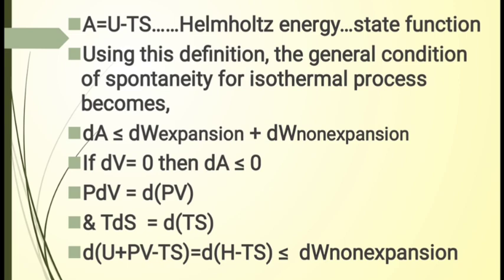Since A equals U minus TS, where A is the Helmholtz free energy and is a state function, the general condition of spontaneity for an isothermal process becomes: dA is less than or equal to dW-expansion plus dW-non-expansion. When volume is constant, dW-expansion equals zero, so the Helmholtz energy condition simplifies to dA less than or equal to zero.